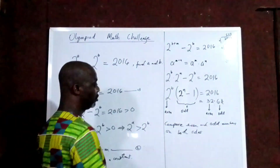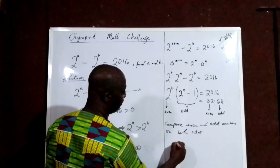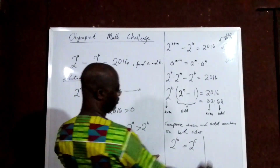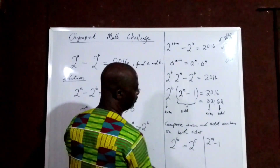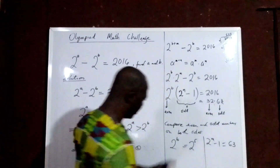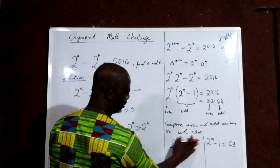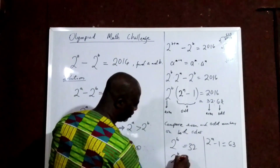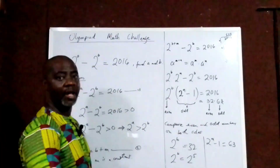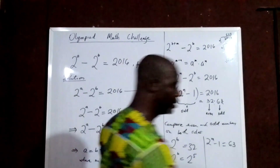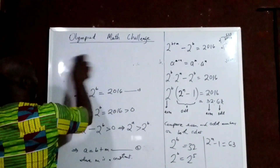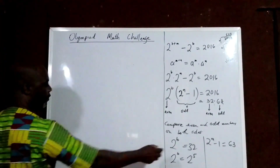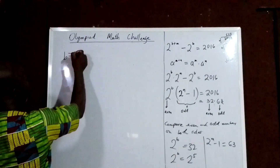So if that is the case, 2 to the power of B will be equal to 32, which is 2 to the power of 5. And 2 to the power of M minus 1 will be equal to 63. Therefore, when we compare: 2 to the power of B equals 2 to the power of 5, which means B equals 5.